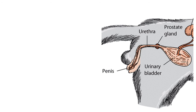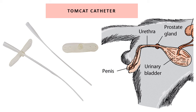A feline urethra is relatively shorter and smaller than a canine urethra, which is why you use a tomcat catheter. Why is it called a tomcat catheter? Is it only used for males? Strictly, yes — male cats suffer from urinary obstruction far more than female cats. In over six years of practice, I have only seen two cases of blocked female cats where catheterization was attempted and successfully done.